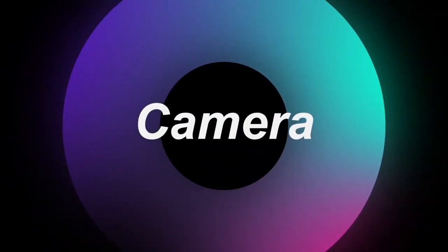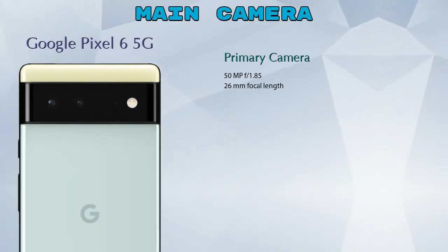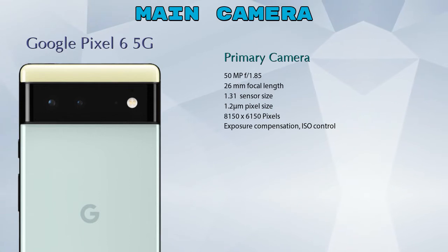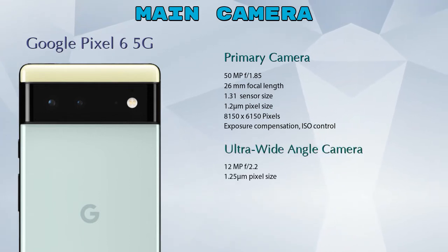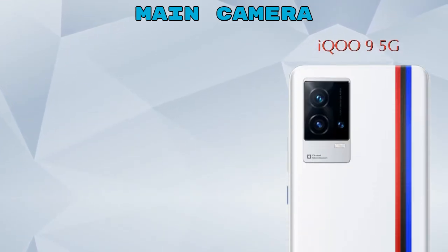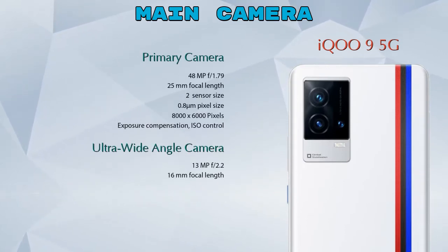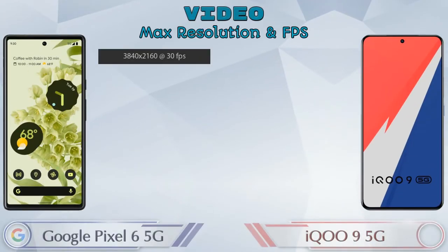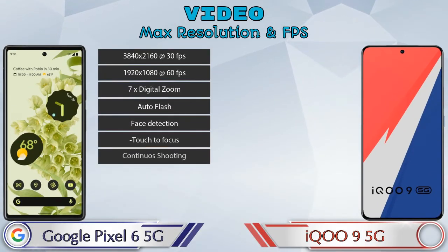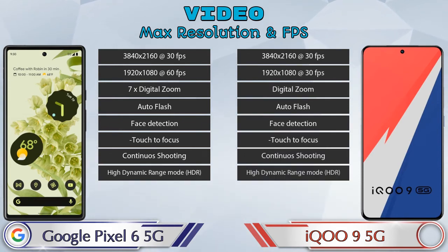Let's see the details about our favorite feature — camera. First, let's talk about the rear camera. We can see two cameras in Pixel 6 5G: a primary camera and an ultra-wide angle camera. In iQOO 9 5G we can see three cameras: primary camera and ultra-wide angle camera. For video, both phones have different types of features available.